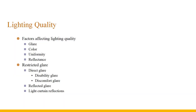Lighting quality refers to the brightness distribution in the light environment, including all brightness distributions that are conducive to visual function, comfort, ease of viewing, safety, and aesthetics. Factors affecting lighting quality include glare, color, uniformity, reflectance, etc. To ensure lighting quality, direct glare, reflected glare, and light curtain reflectance need to be limited.